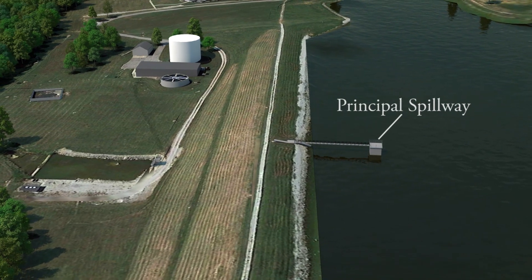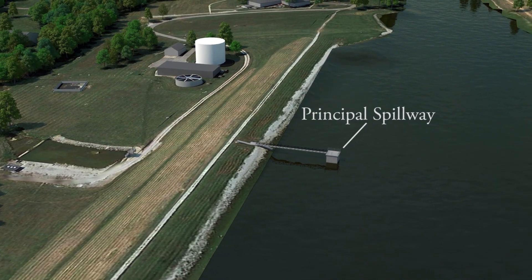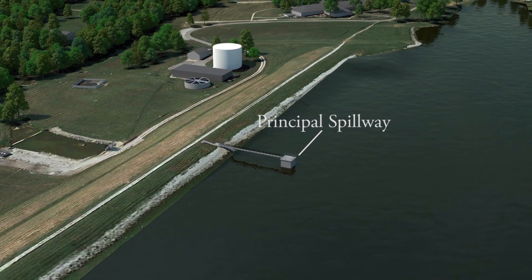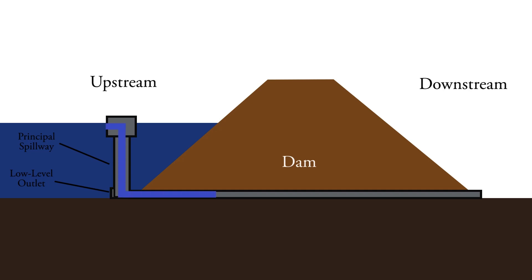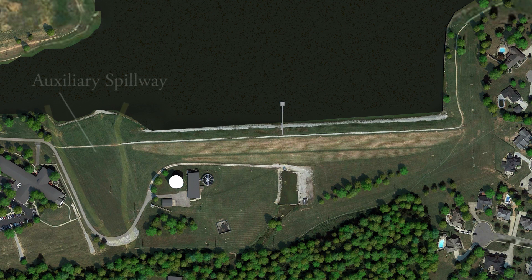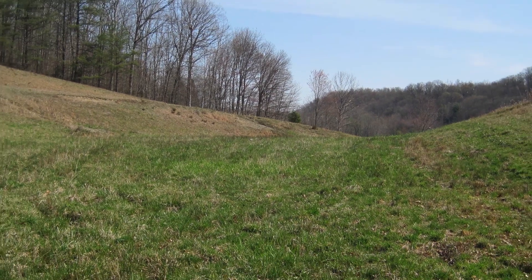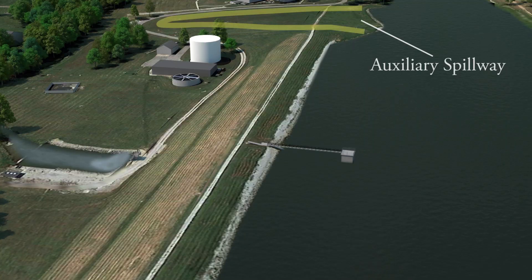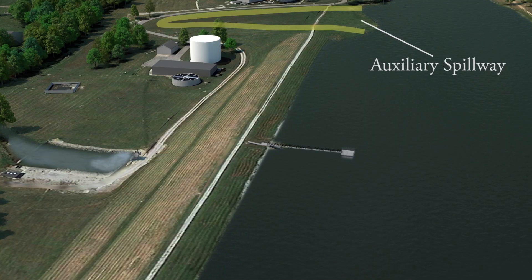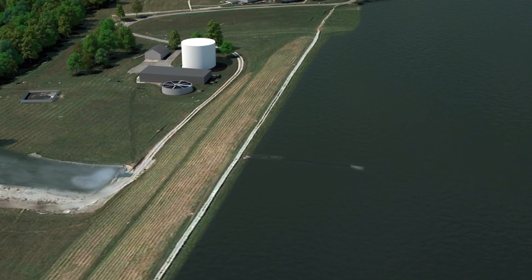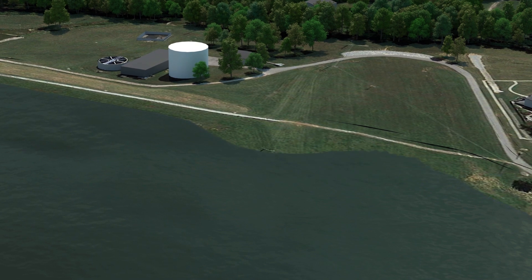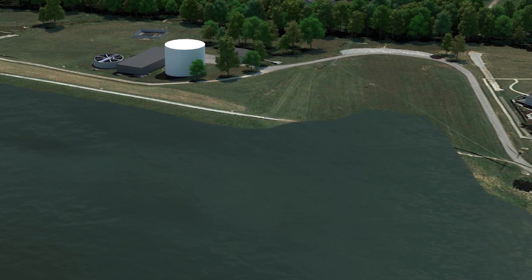The principal spillway — also sometimes called the main spillway, primary spillway, or service spillway — is the structure that releases normal flows from the dam. It is often a conduit through the dam connected to a vertical pipe known as a riser structure. An auxiliary spillway is often a channel cut into surrounding bedrock, or an earthen channel that is lined, vegetated, or concrete. It is designed to safely pass stormwater from large rainfall events without overtopping the dam crest, and sits at a higher elevation than the principal spillway to release a larger amount of flow.